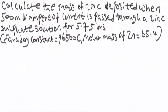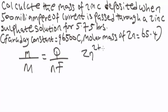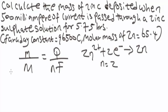Let's go ahead and look at one more example. Calculate the mass of zinc deposited when 500 milliamperes of current is passed through a zinc sulfate solution for 5.75 hours. The molar mass of zinc is 65.4 g/mol and Faraday's constant is 96,500 coulombs. During this electrolysis, the zinc ion loses two electrons to yield a zinc atom, so n = 2.